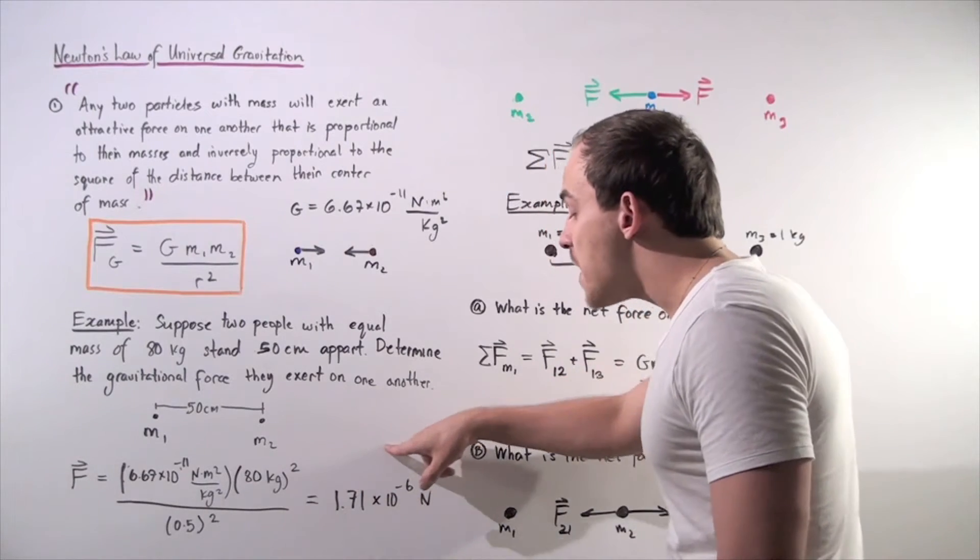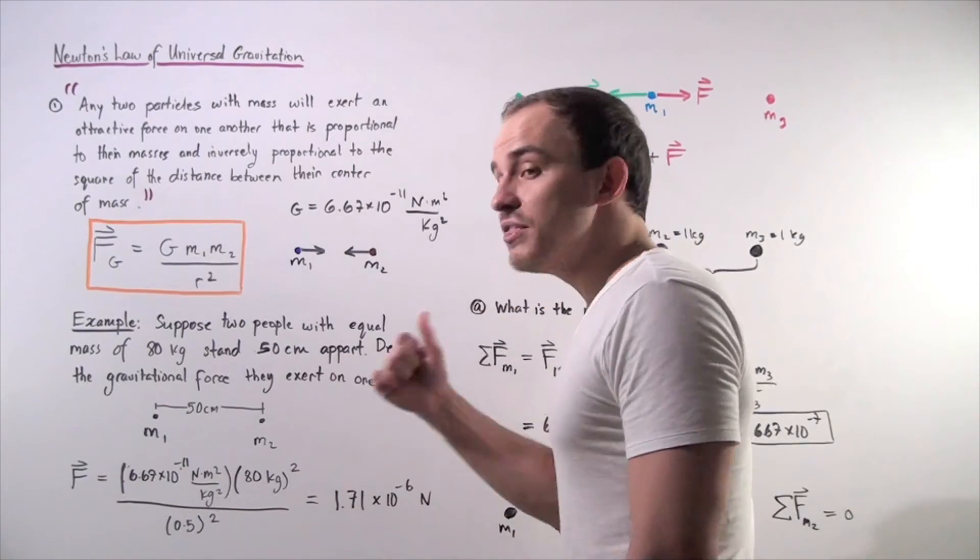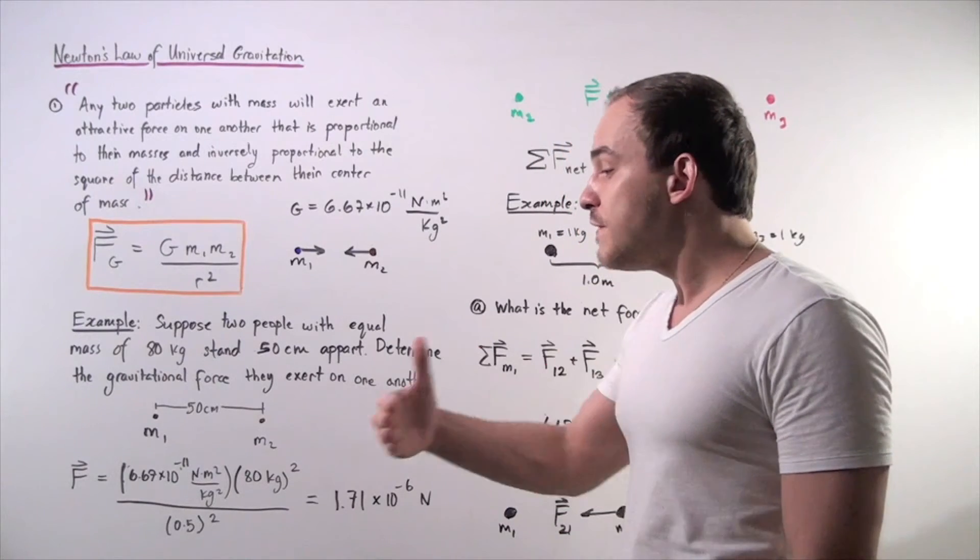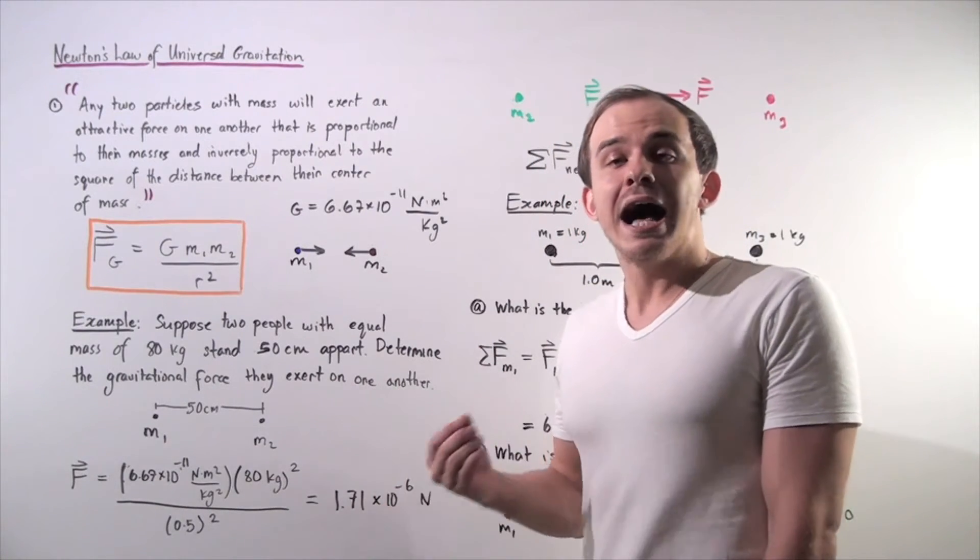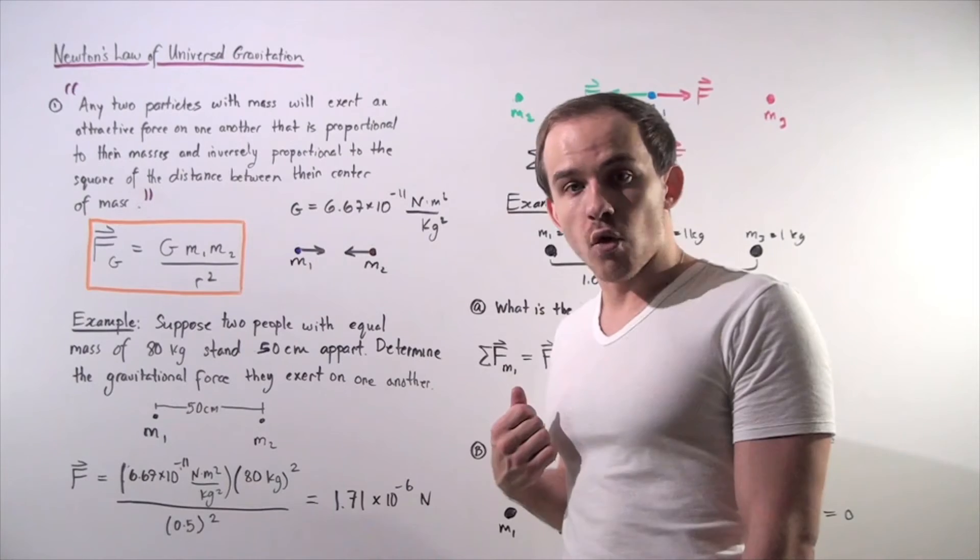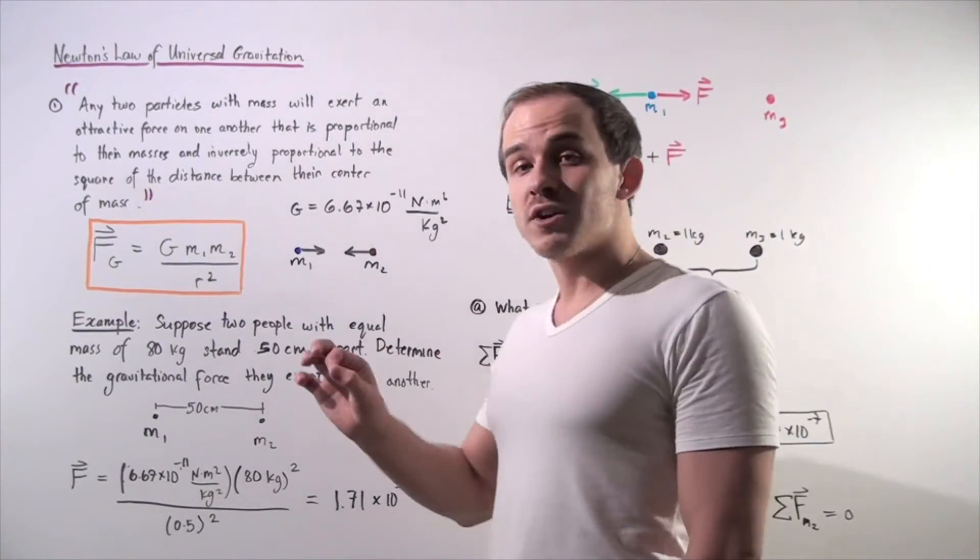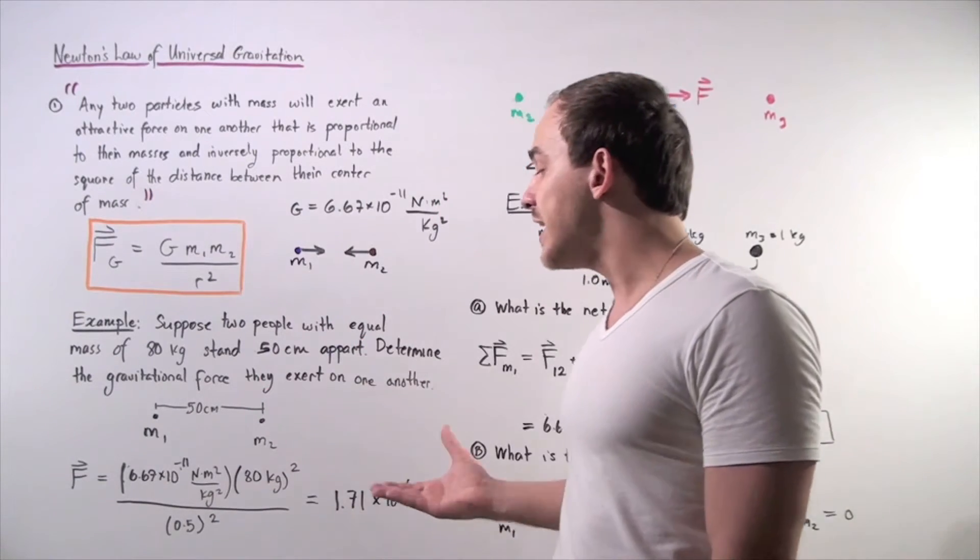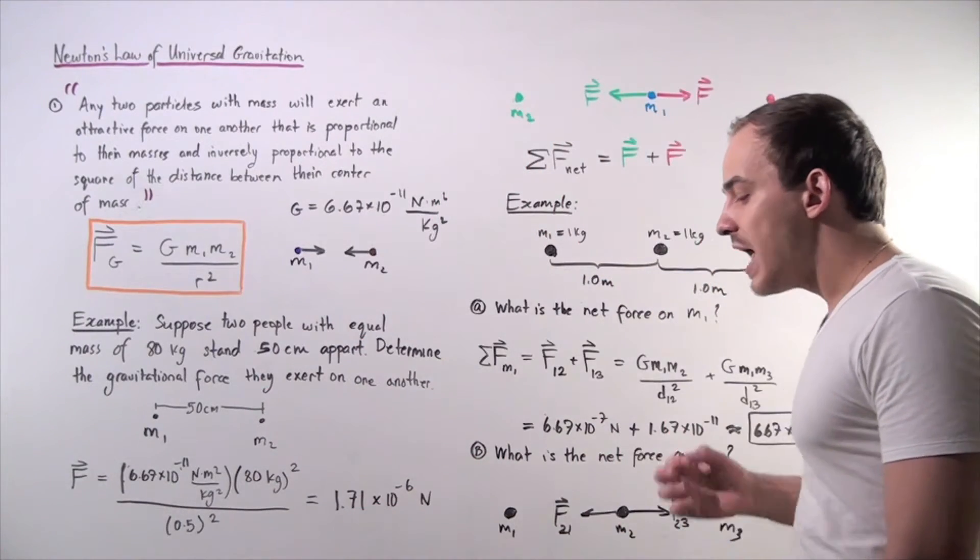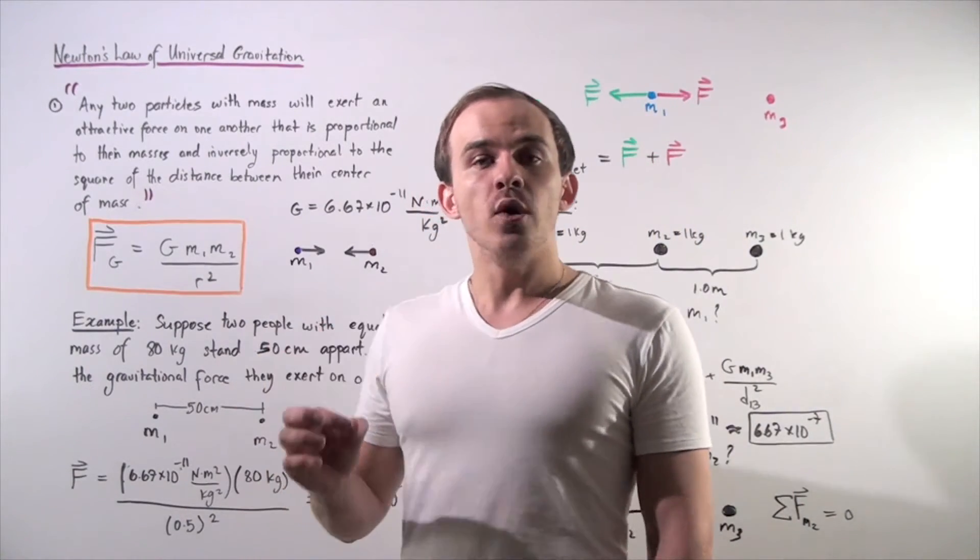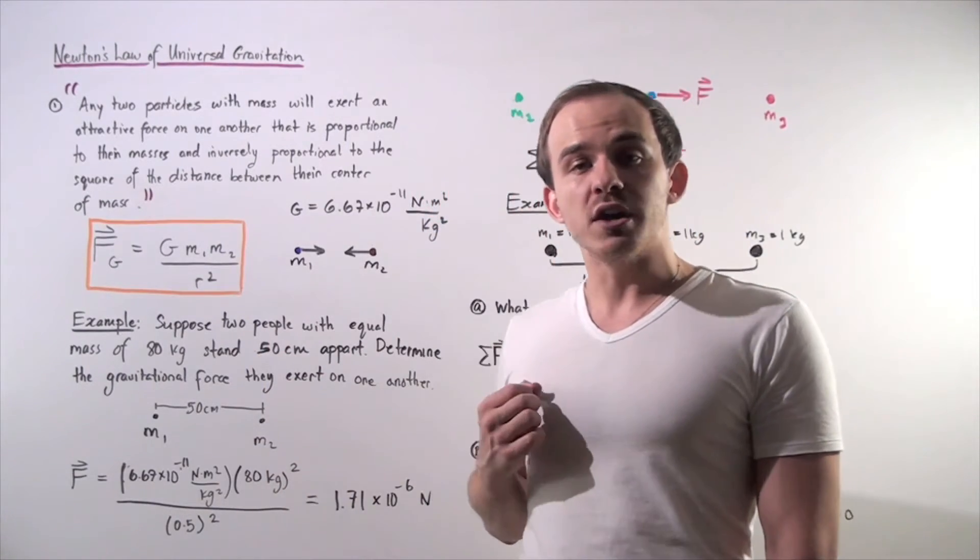Note that this is a very tiny force. And that's exactly why if a second person stands 50 centimeters away, I don't actually feel any force because it's very, very, very small. So even though the force exists, it's very small and we don't actually feel it. And in fact, any two objects that have mass will exert a force on one another.